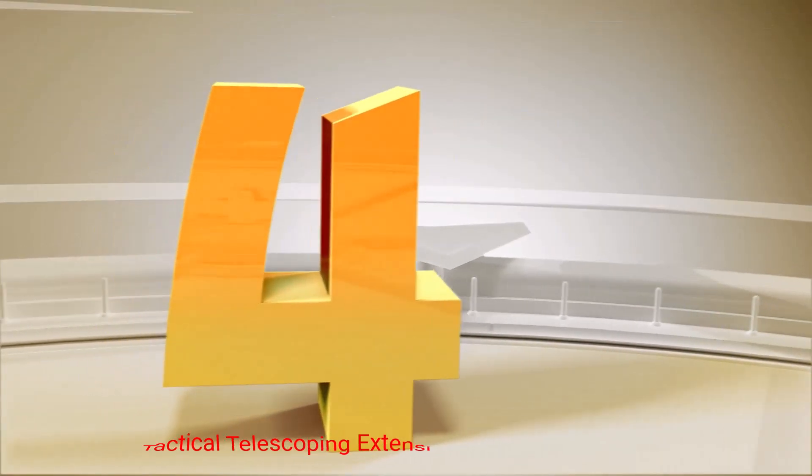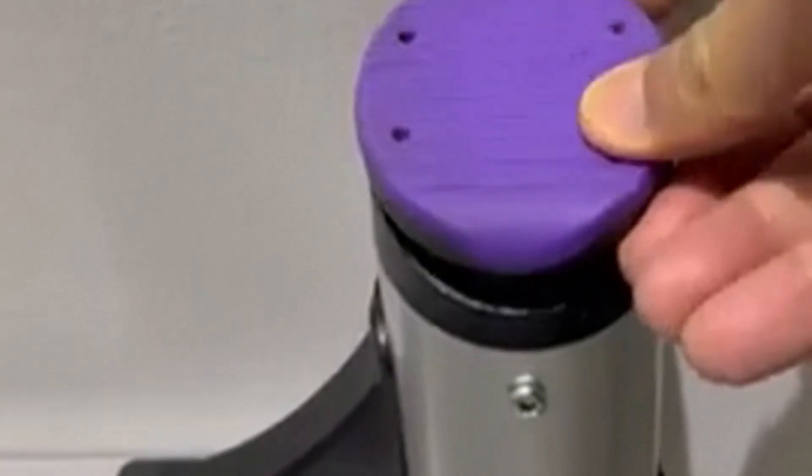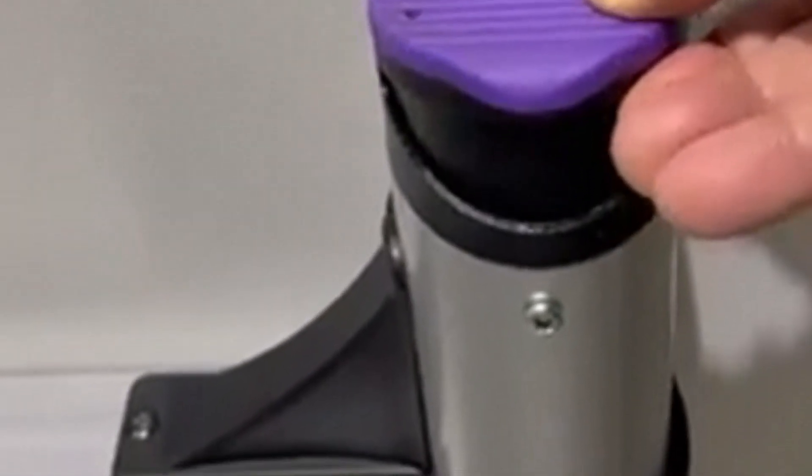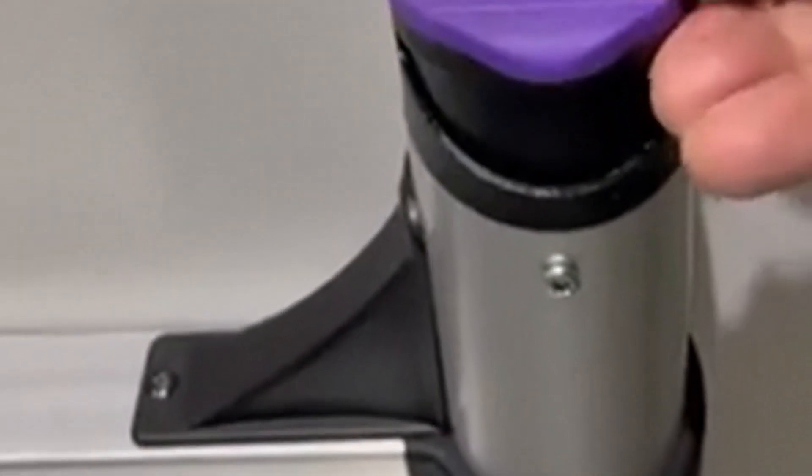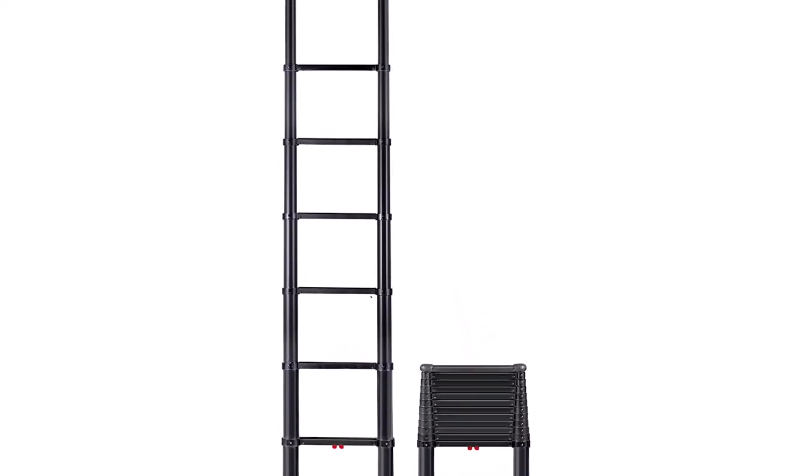Number 4: Telesteps Tactical Telescoping Extension Ladder. The main difference between this Telesteps Telescopic Ladder and the 1600 EP model is that the 1600 ET is designed more as a tactical collapsible ladder. It has almost the same price, OSHA compliance, and other neat features.